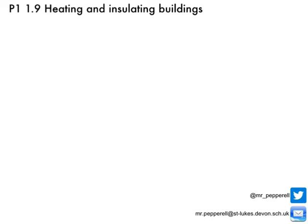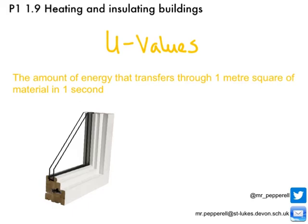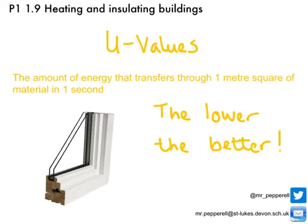We know that we can use different materials to insulate our homes, but how do we know which material is the best one to use? We can find out by comparing what is known as the U-value. The U-value of a material is defined as the amount of energy that transfers through one metre squared of that material in one second. The lower the U-value, the better, as this means less energy is transferred through that material. For example, a double-glazed window has a U-value four times less than a single pane of glass, meaning it would take four times as long to lose the same amount of energy. The rule is: if you want to use a material as an insulator, the lower the U-value, the better.